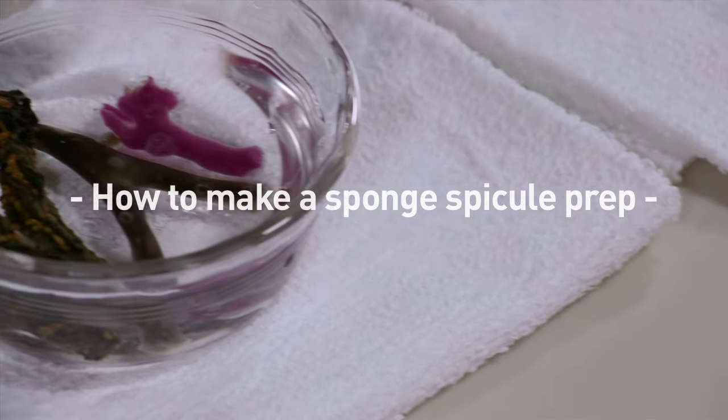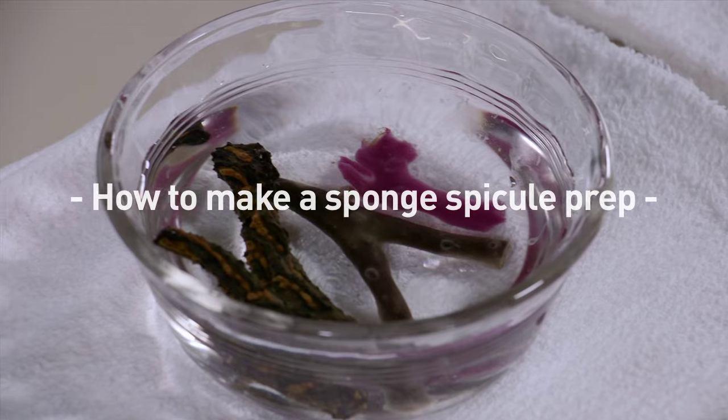In this video I'll show you how to make a sponge spicule prep using bleach. We're going to cut a small piece of sponge tissue, dissolve it in household bleach, then rinse it and look at it under the microscope.